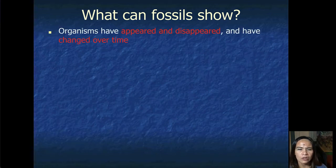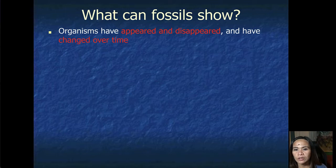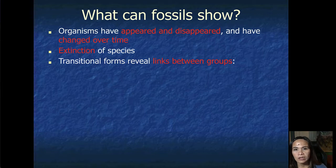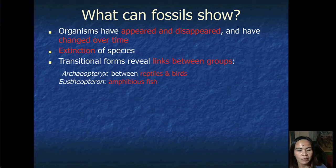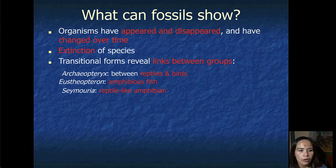What can fossils show? Of course, organisms have appeared and disappeared and have changed over time, and therefore it shows extinction of species. The transitional forms actually reveal the link between Archaeopteryx, like between reptiles and birds. They use Theophtheron, which is an amphibious fish, and your Cymoria, which is a reptile-like amphibian.